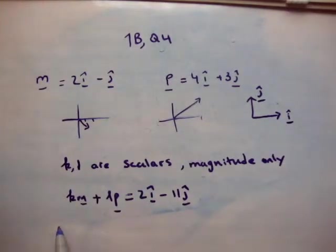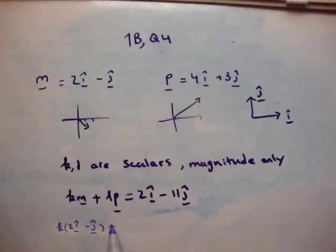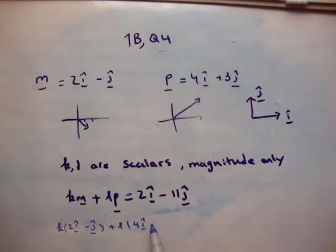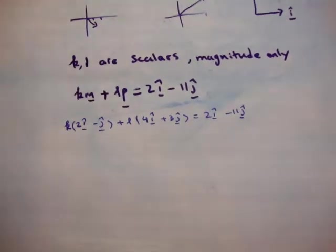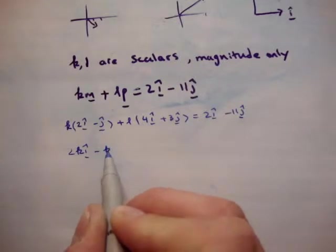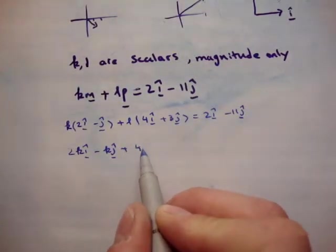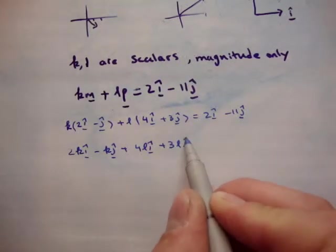First of all, I'm just going to multiply k times m, so that's k times (2i-hat minus j-hat) plus l times (4i-hat plus 3j-hat) equals 2i-hat minus 11j-hat. So we get 2k times i-hat minus k times j-hat plus 4l times i-hat plus 3l times j-hat is equal to 2i-hat minus 11j-hat.